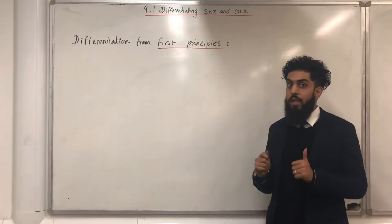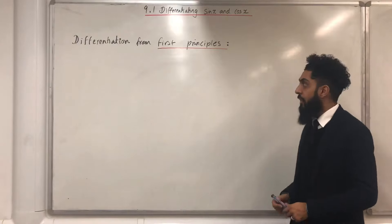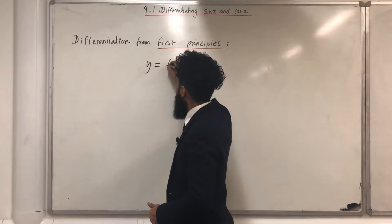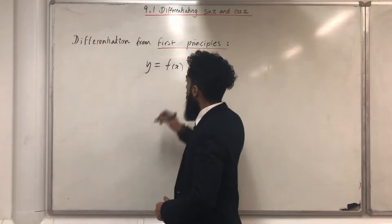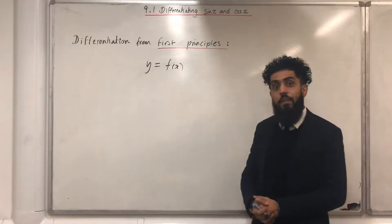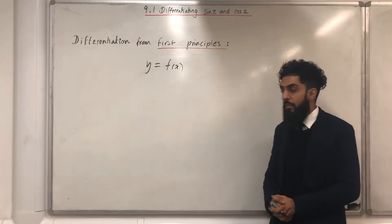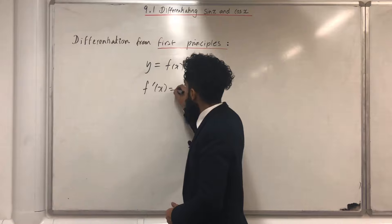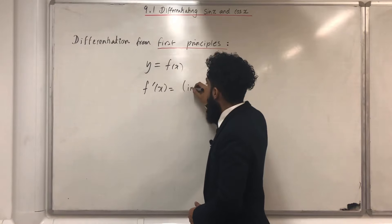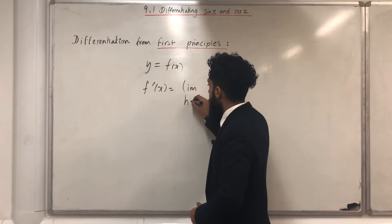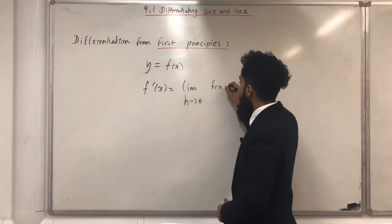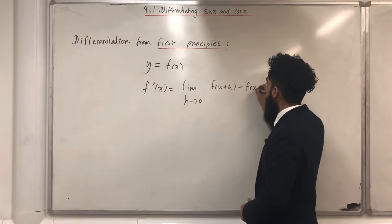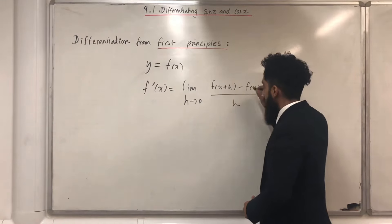First principles is our key word. Suppose in the exam you're given y equals f of x. Then, from first principles, f dash of x is given by the following: limit, as h tends to 0, of f of x plus h minus f of x, all over h.